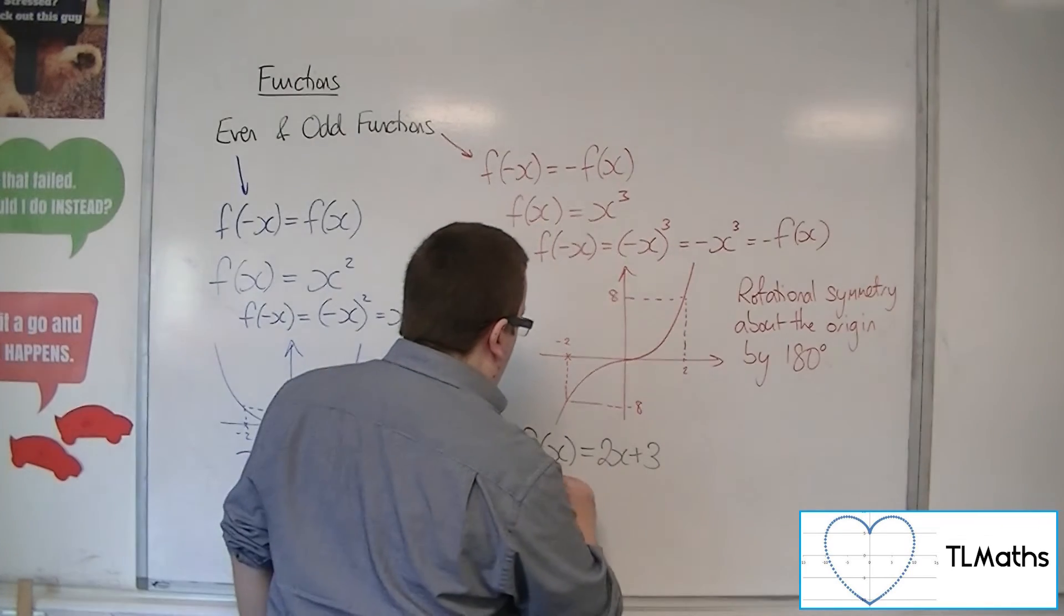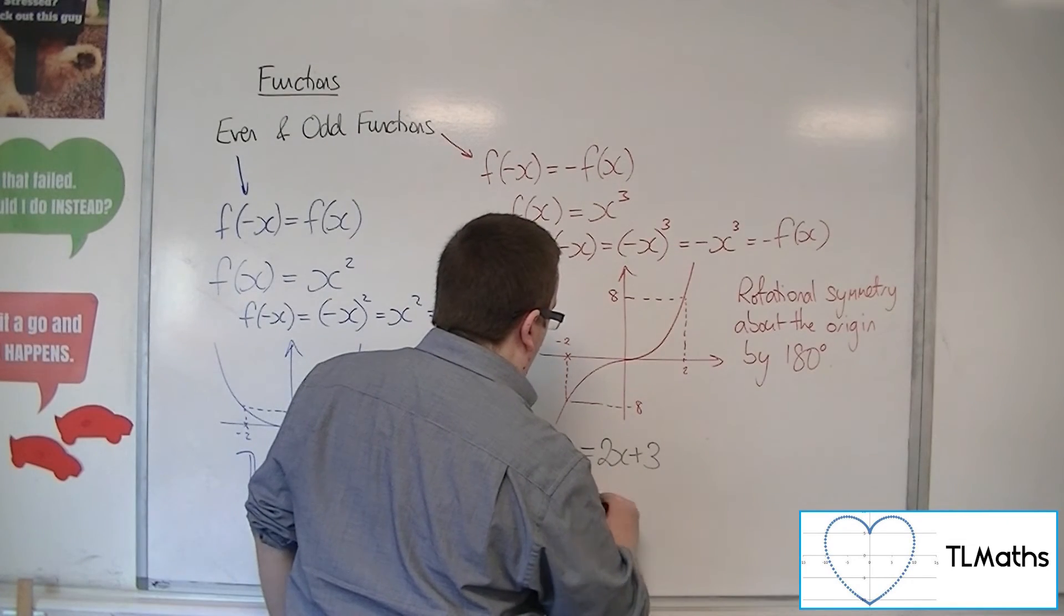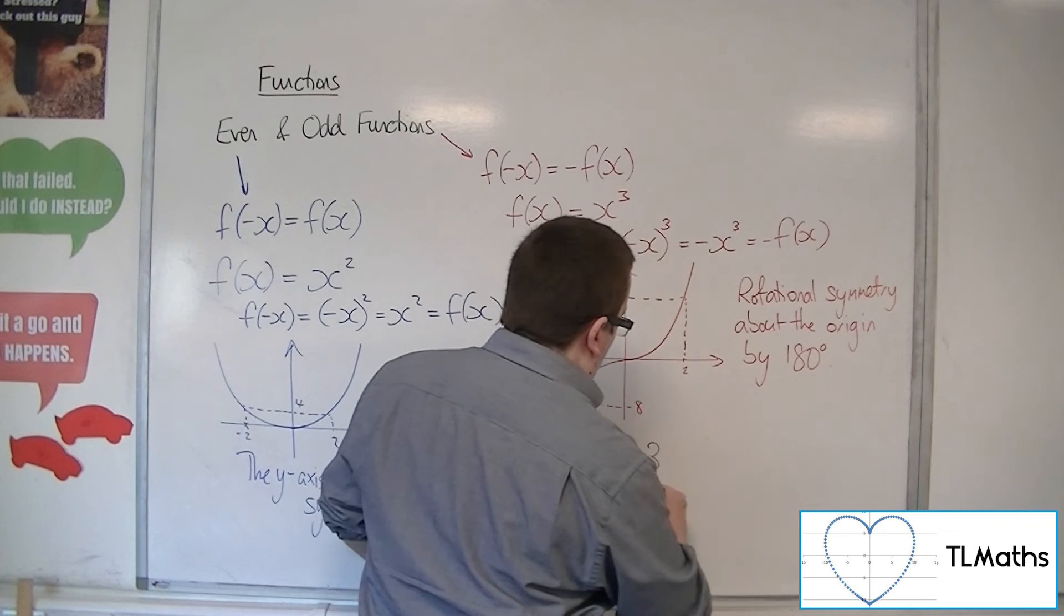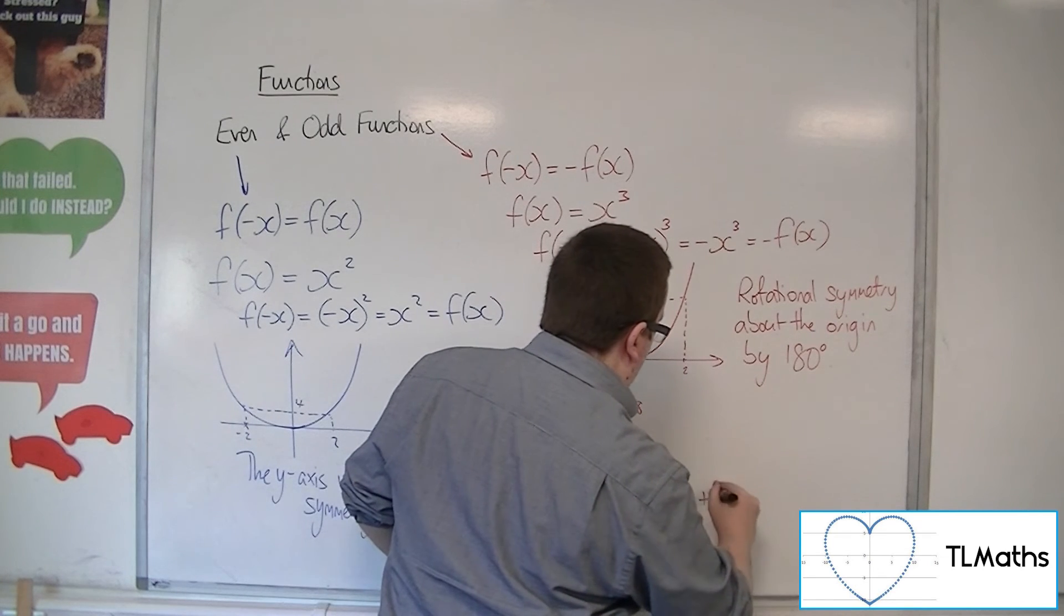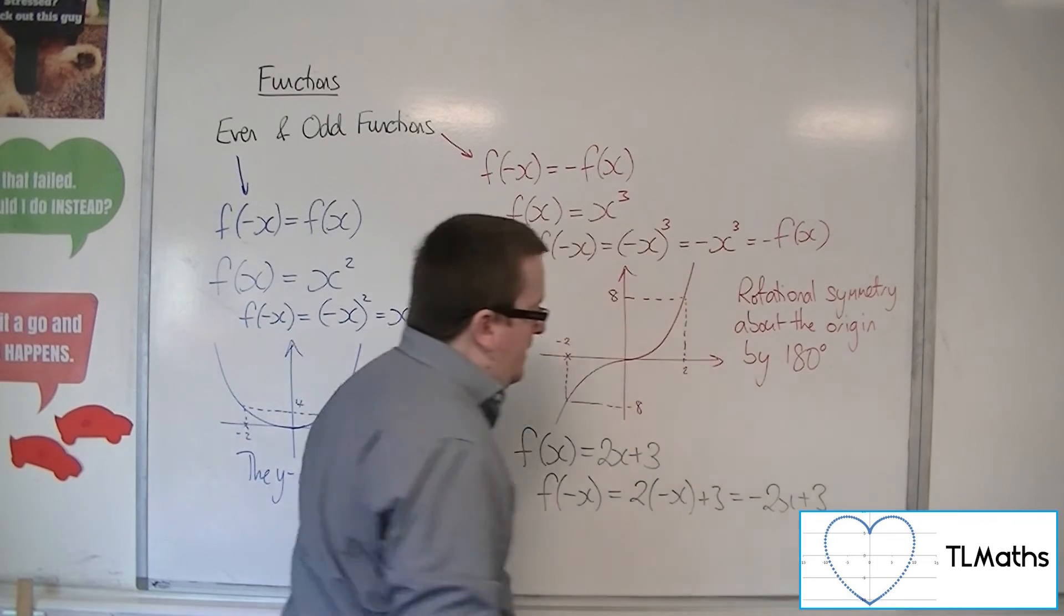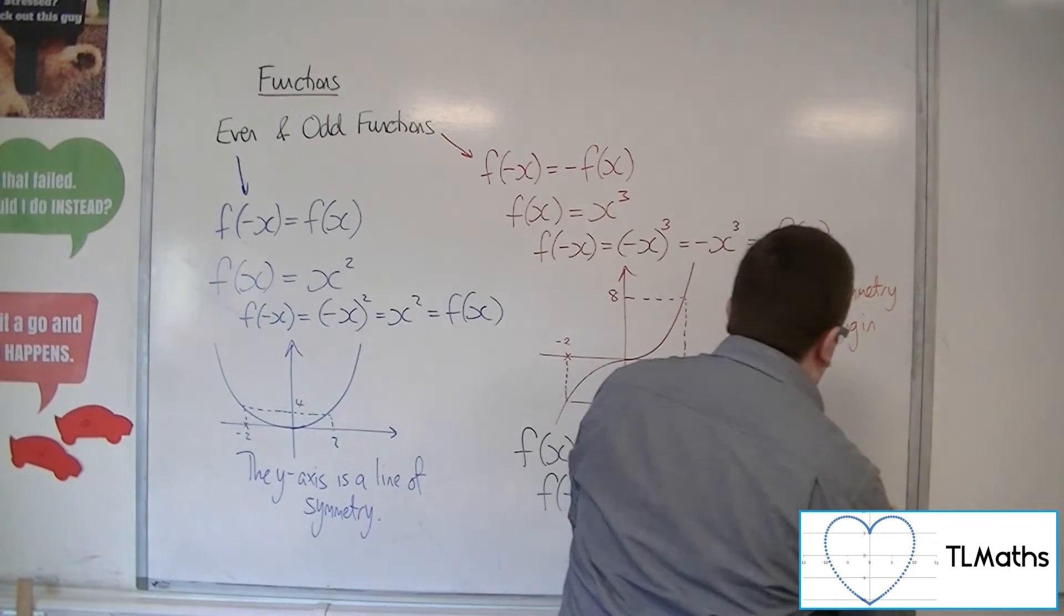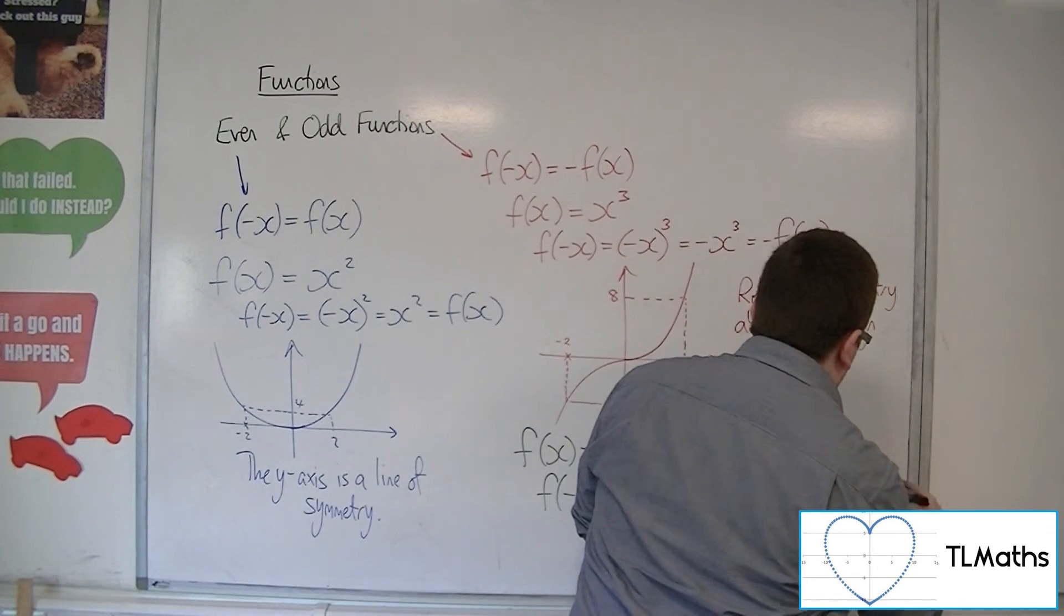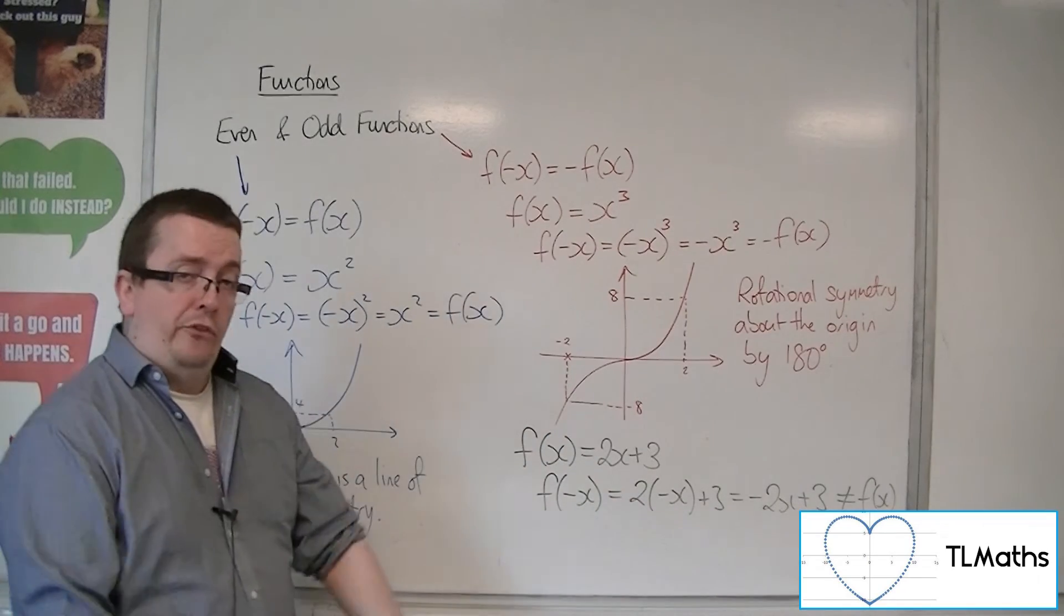If I replace x with minus x, I get two lots of minus x plus 3, which is minus 2x plus 3. Now, that is not the original function, certainly, so it's not even.